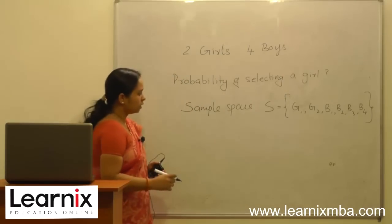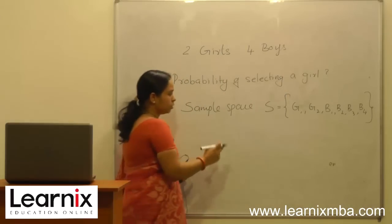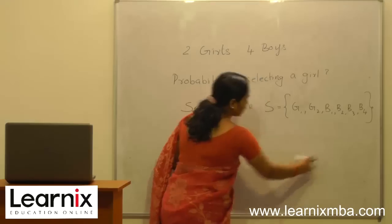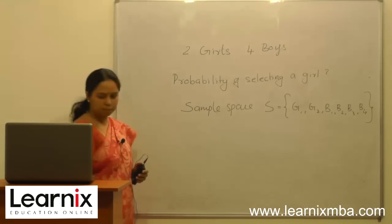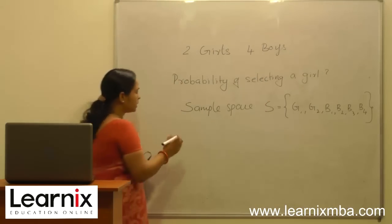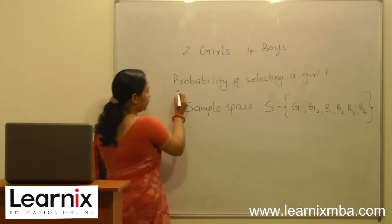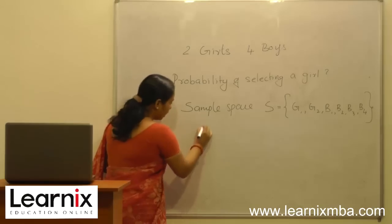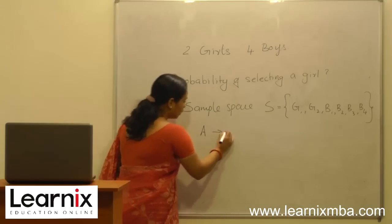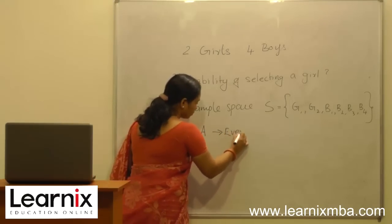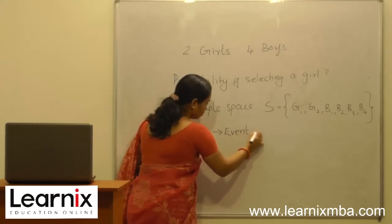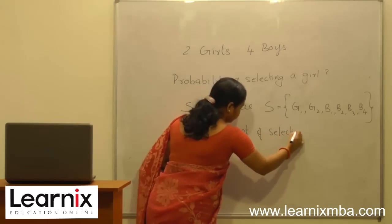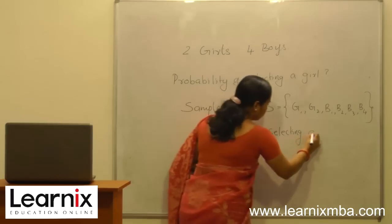Here G1 and G2 represent the two girls, and B1, B2, B3, and B4 represent the four boys of the class. Now, we are interested in the event of selecting a girl, so we can define A as the event of selecting a girl.